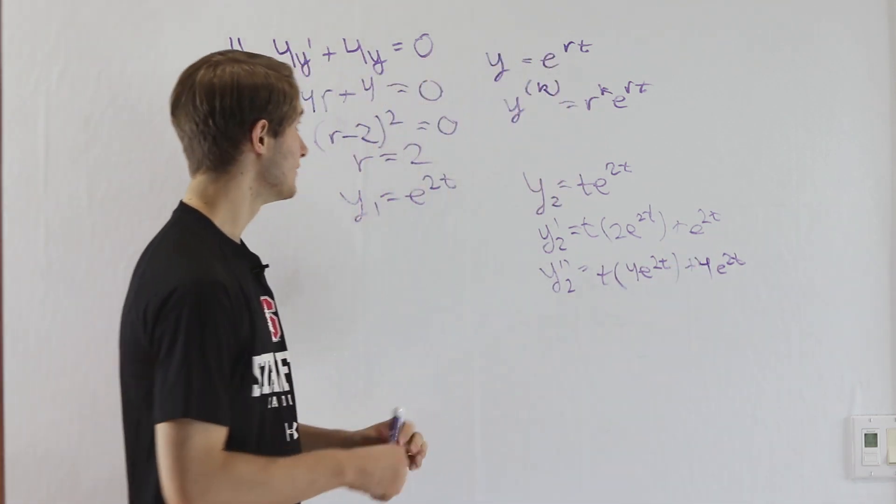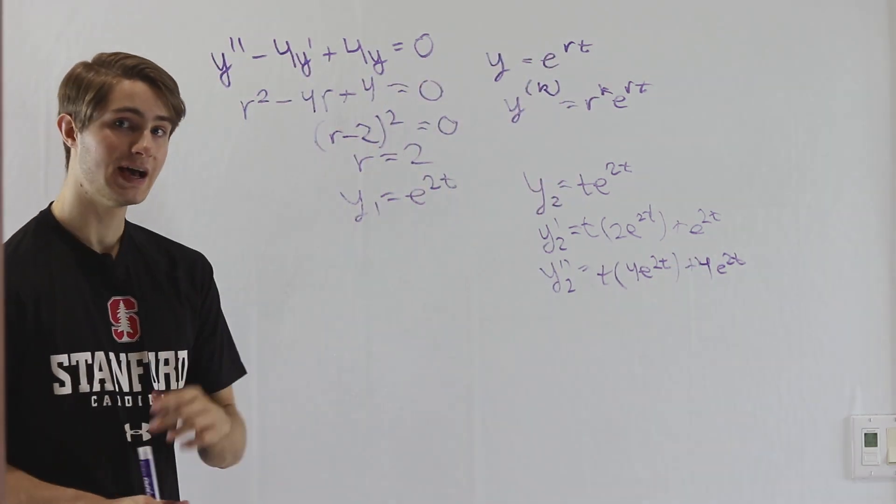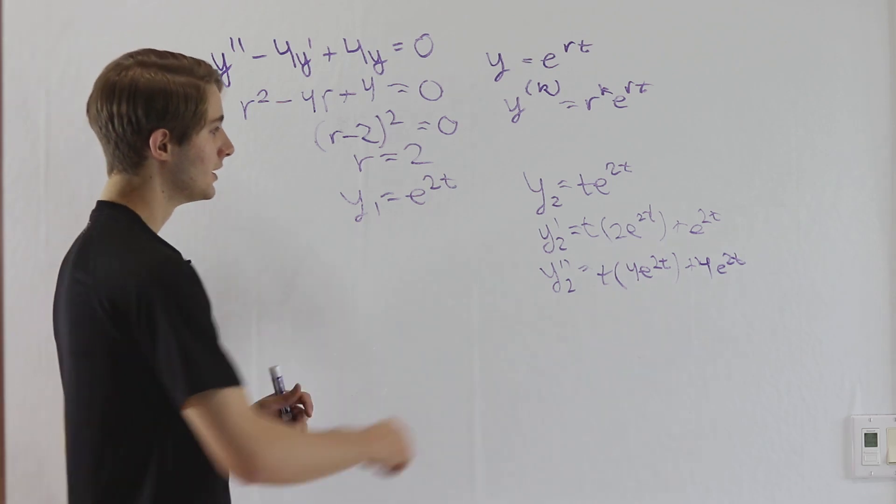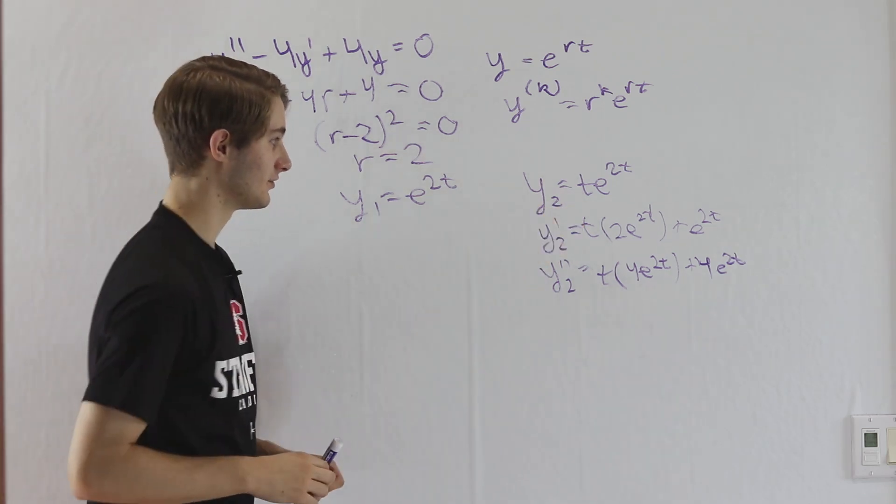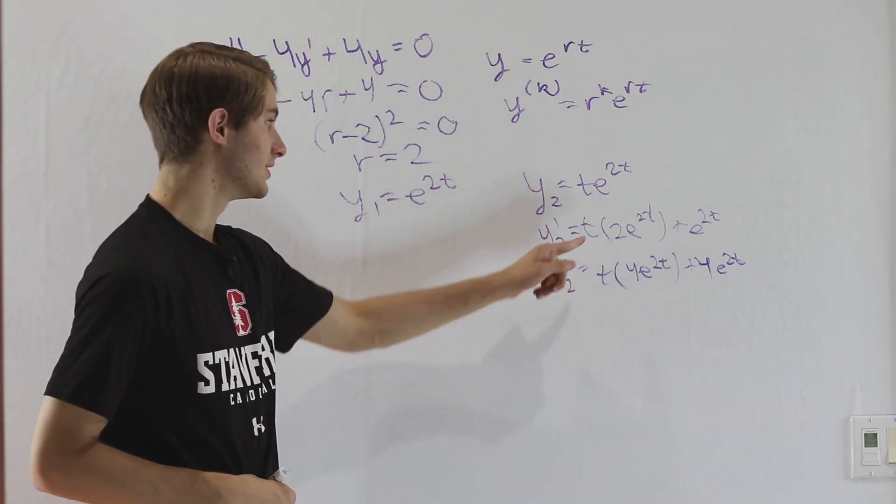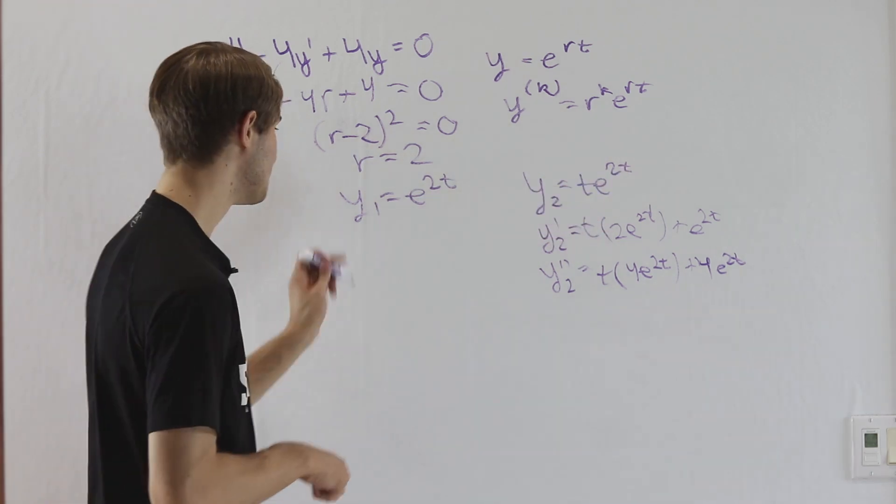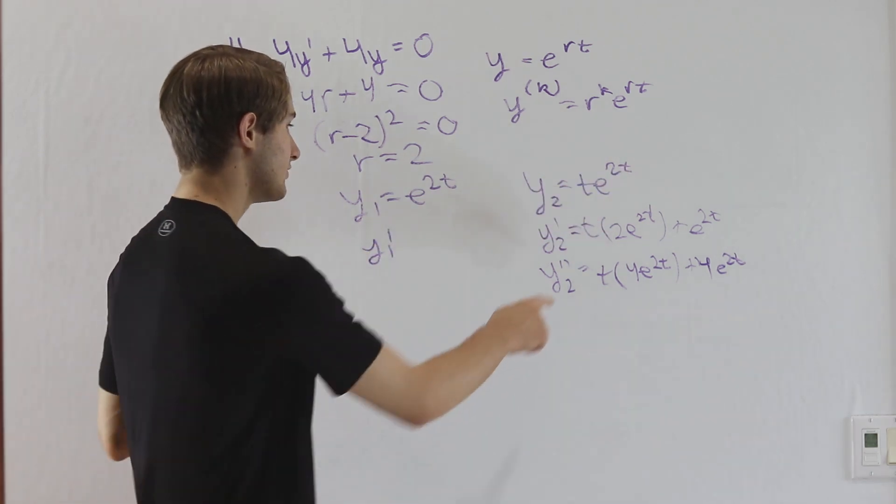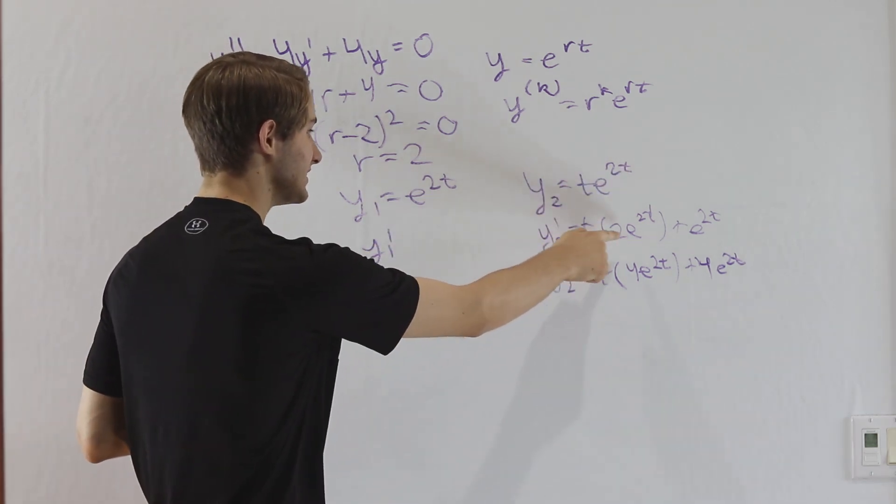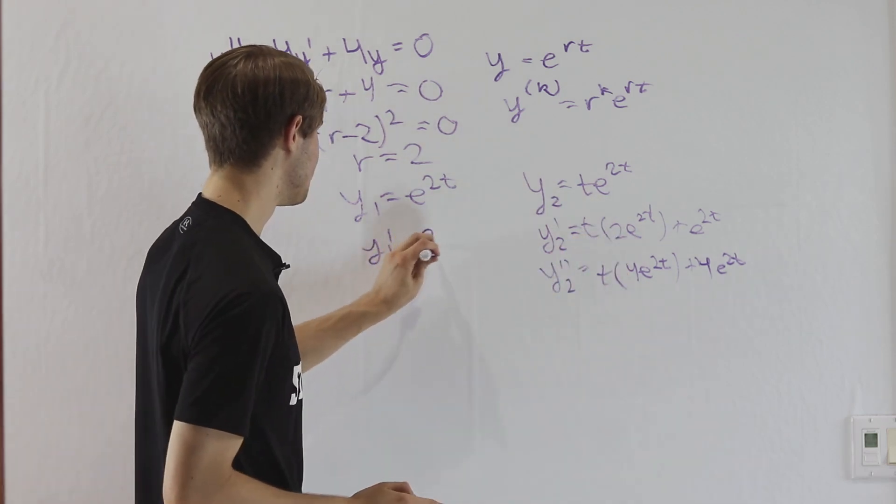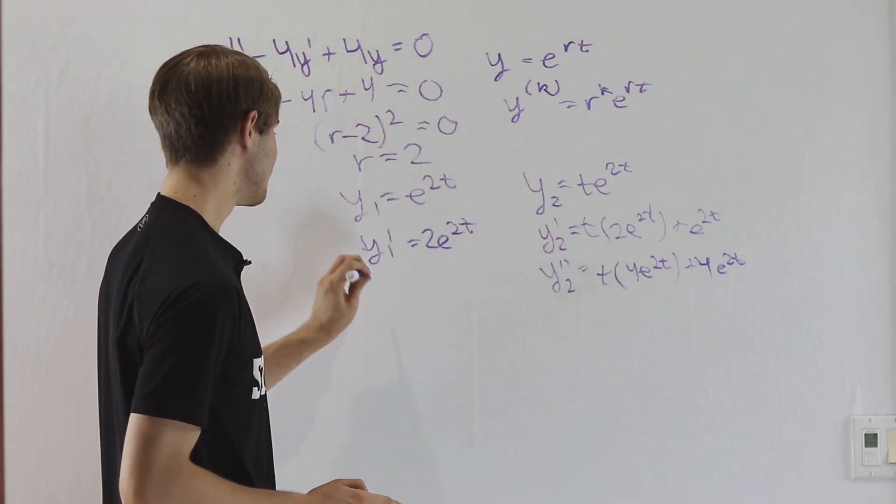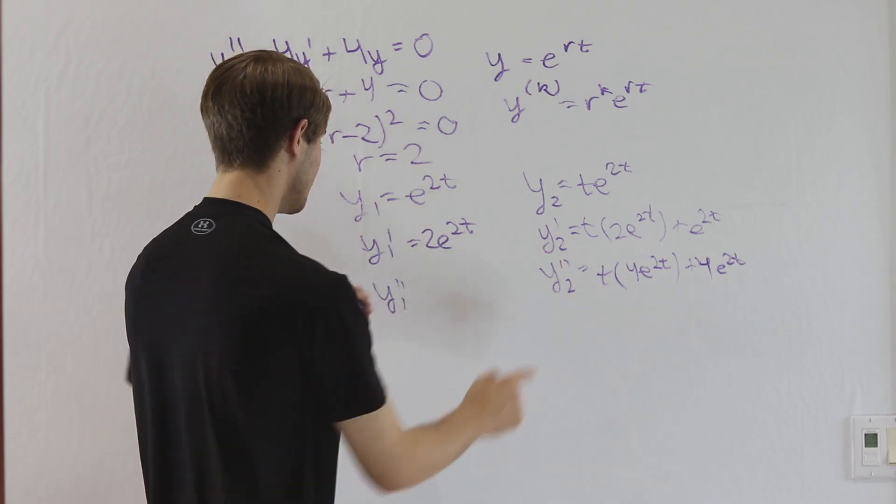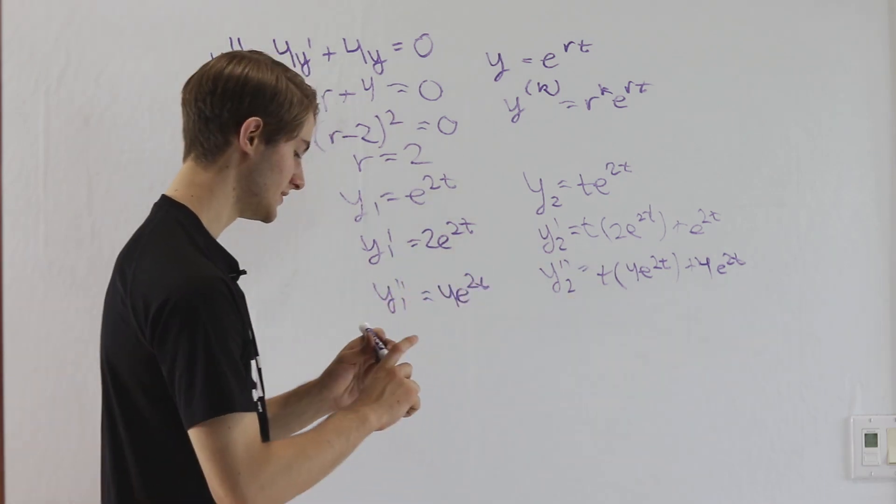Now we have both of our derivatives and we can plug them in. But before we do that, I'm going to make an observation. Because we have this t here out in front, if we look at the derivative here, we have t e to the 2t. And then the first derivative has t times 2 e to the 2t. And then the second derivative here has t times 4 e to the 2t.